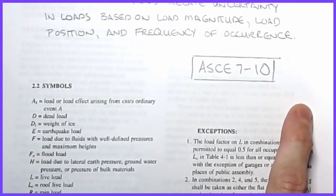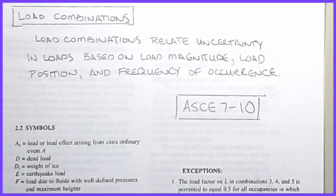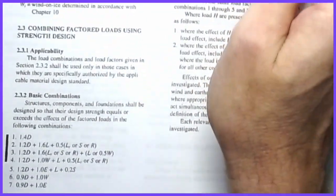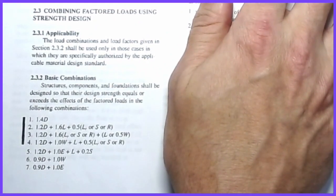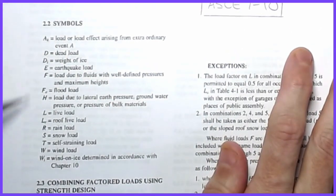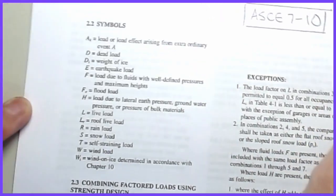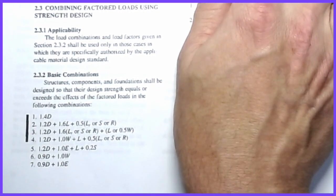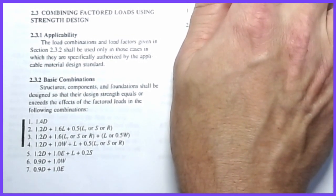Now that we've covered dead loads and live loads, the question is how to combine them — obviously dead load and live load can occur simultaneously. ASCE 7-10 provides seven base load combinations. Up to this point we haven't talked about safety factors, and one of the ways we ensure safety in a structure is by increasing loads during analysis. For example, a 100-pound dead load might be designed at 140 pounds to provide room for error.